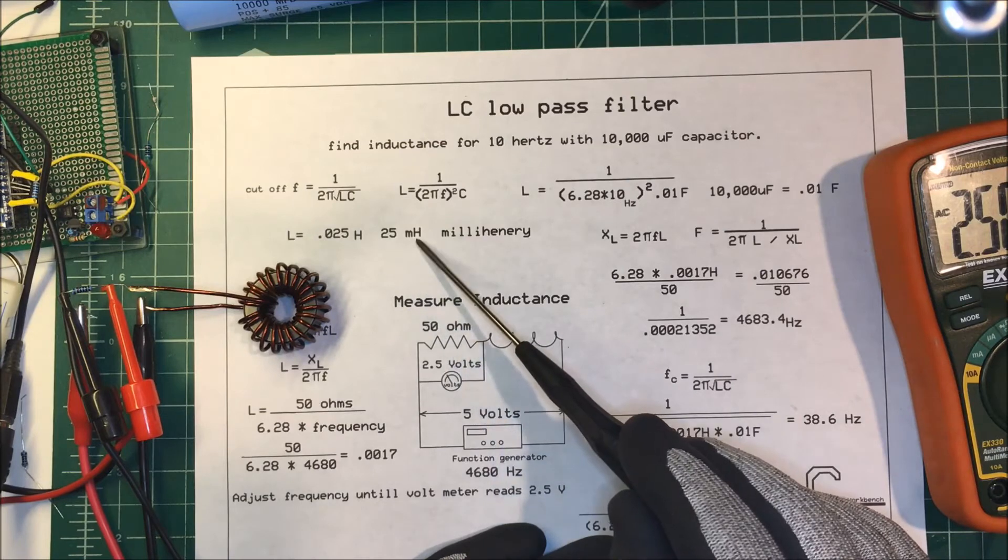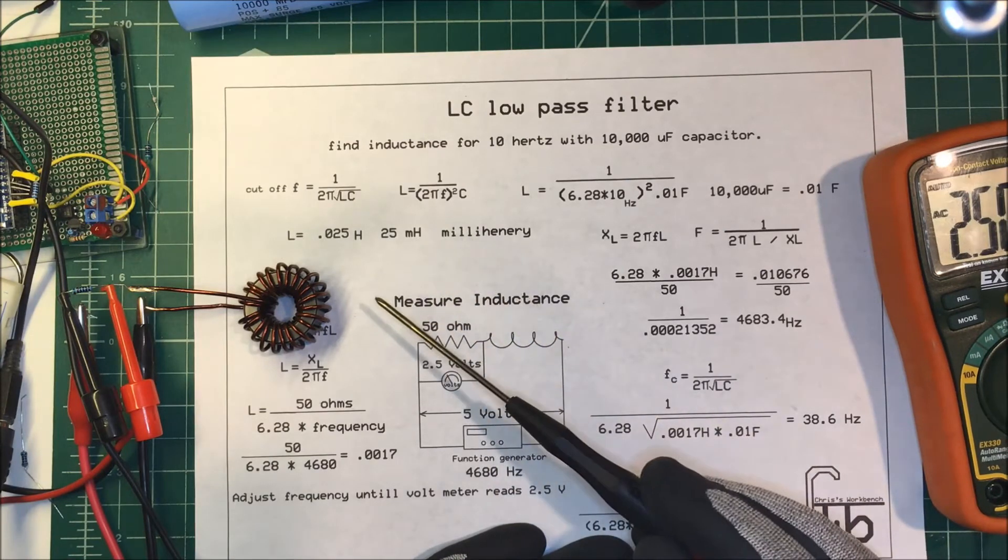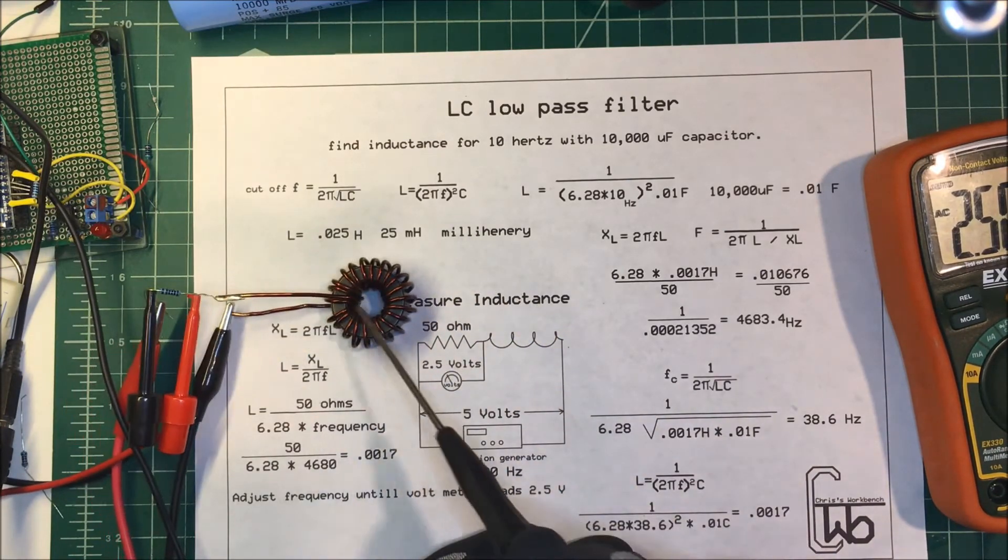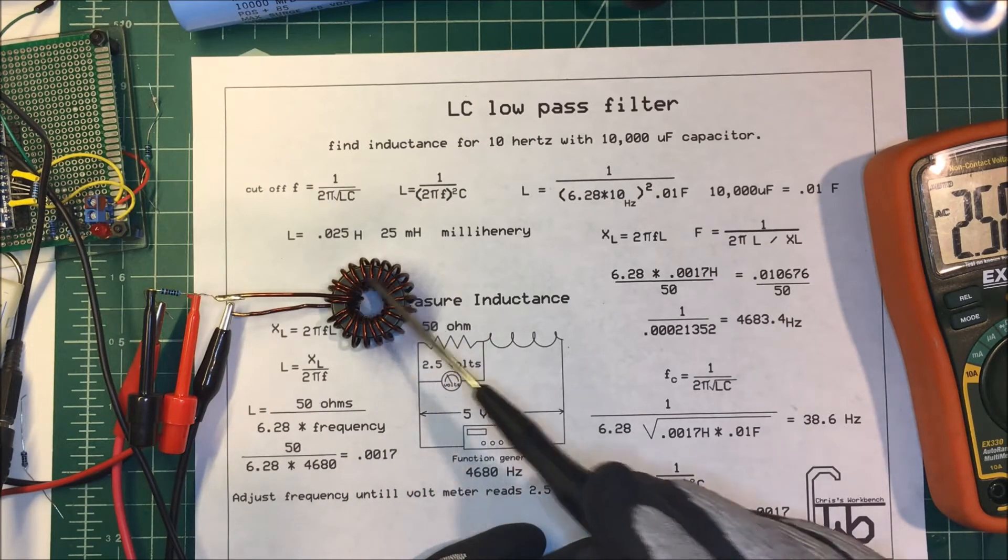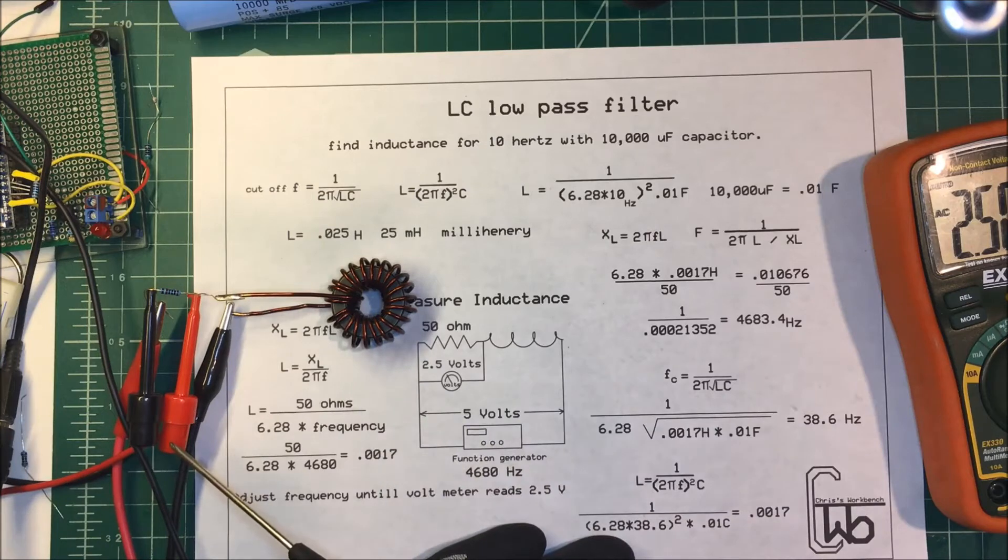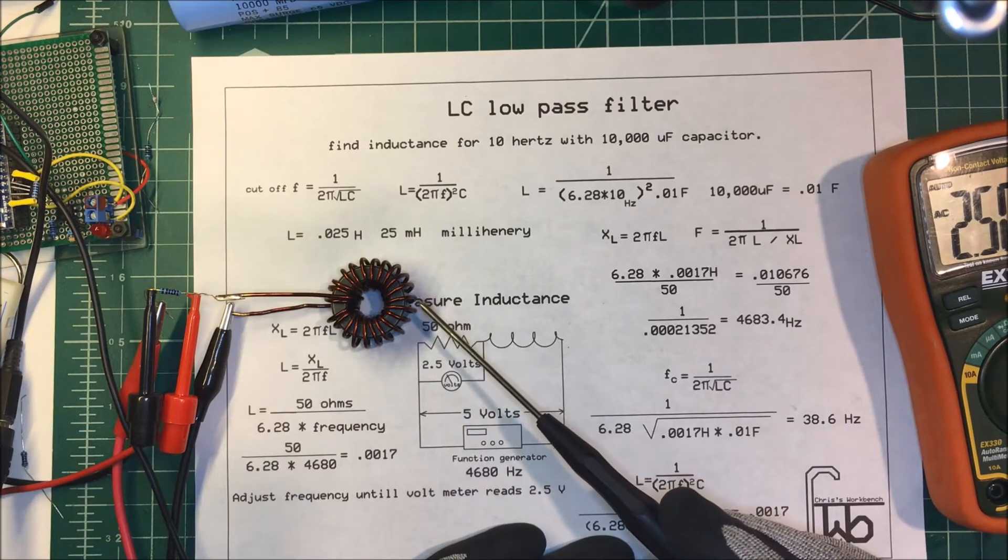I need an inductor that's 25 millihenrys and can pass 10 amps, so I wound this myself. This was the largest ferrite core that I had, and this is number 15 copper wire, which is capable of 10 amps.